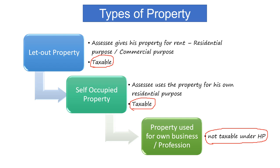The format I just explained — the three deductions of standard deduction, interest on loan, and pre-construction interest — is for a let out property. For a self-occupied property, the annual value is always nil. You cannot claim standard deduction; you can claim only interest on loan and pre-construction interest. Only for a let out property do we claim all three deductions.